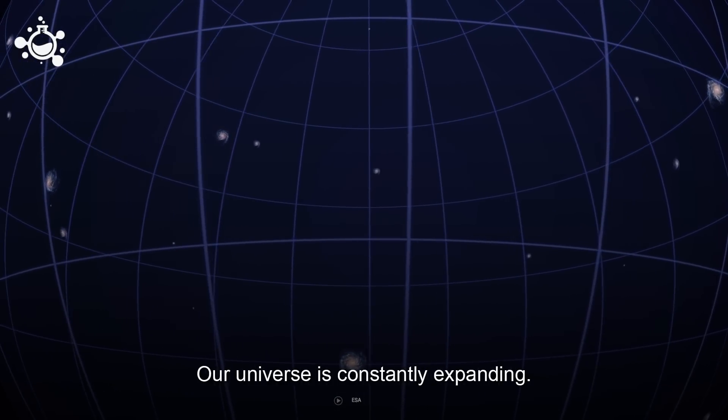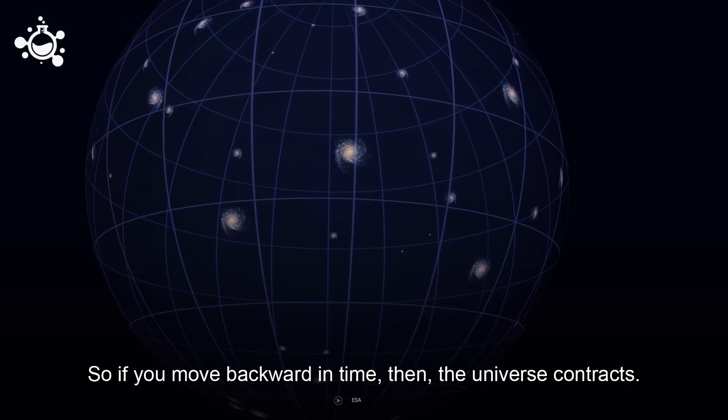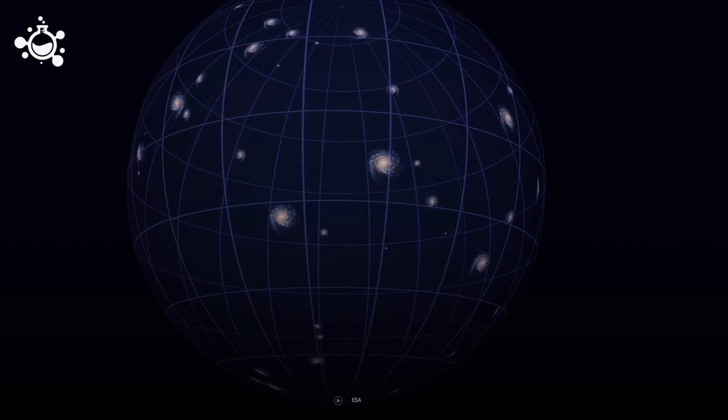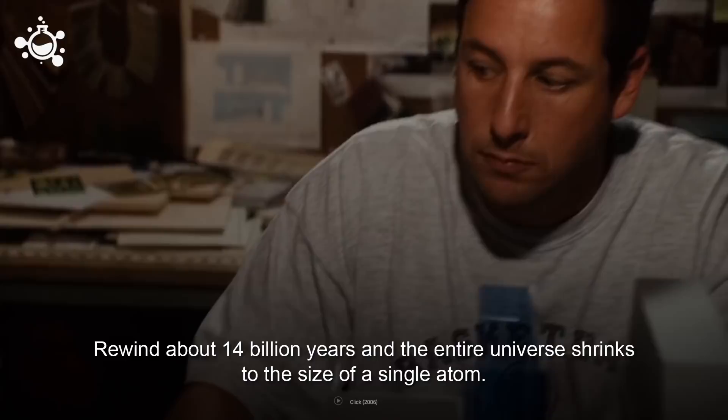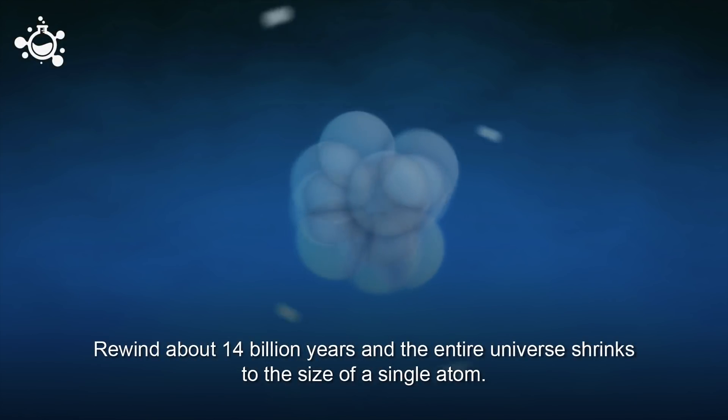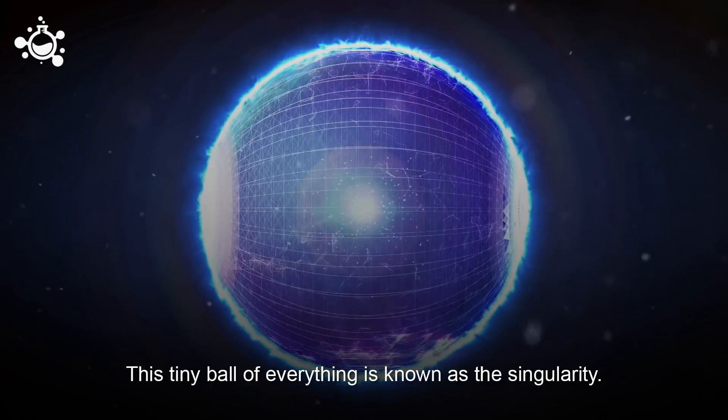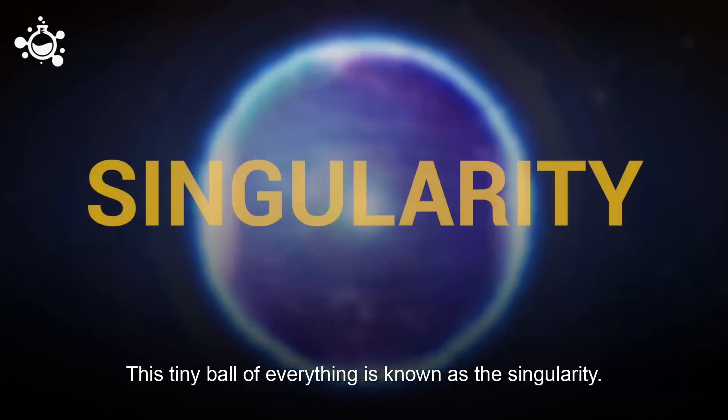So if you move backwards in time, then the universe contracts. Rewind about 14 billion years and the entire universe shrinks to the size of a single atom. This tiny ball of everything is known as the singularity.